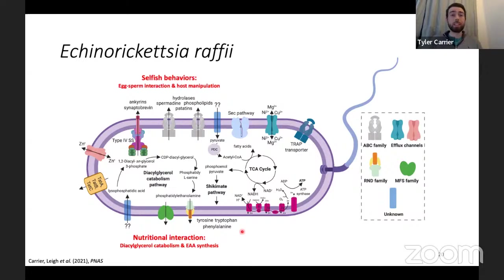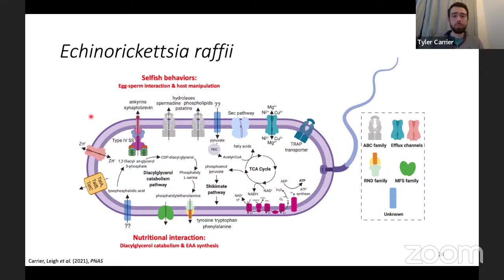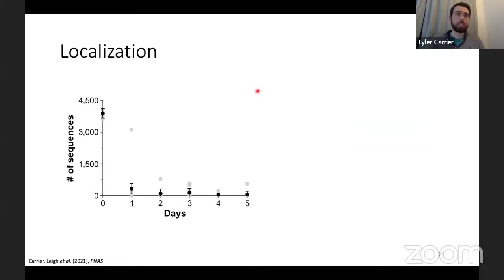It also appears this bacterium could have some selfish behaviors. There was a type 4 secretion system and approximately 80 predicted secreted proteins. Three of those had eukaryotic-like domains on them: two were ankyrins, known to interact with the host, and one had a domain homologous to a male-killing gene. A third one had a synaptobrevin domain, and interestingly, synaptobrevin is a gene involved in fertilization in sea urchins. So we think this bacterium could have a nutritional interaction while also exhibiting some selfish behaviors.